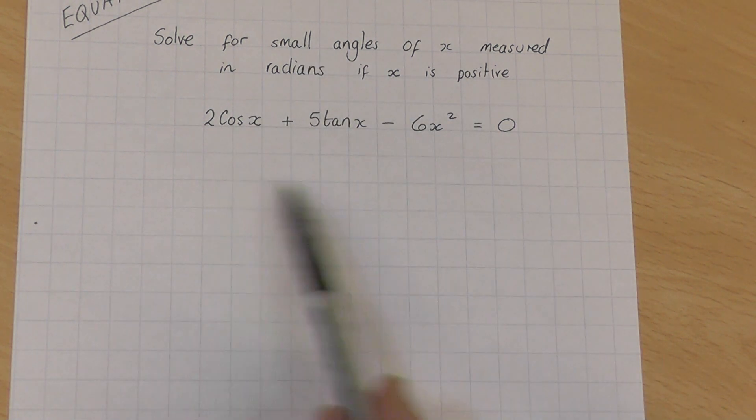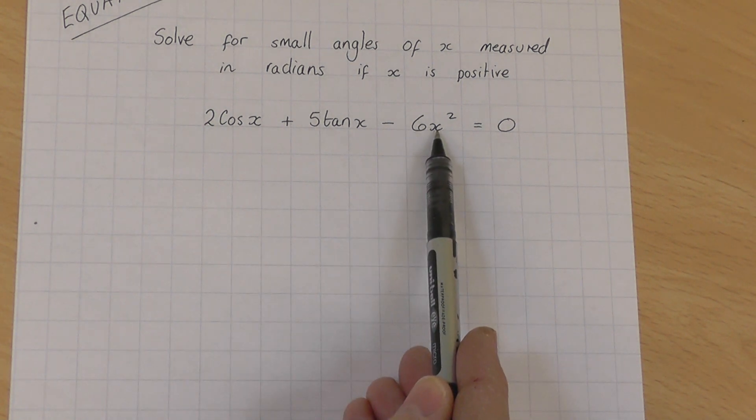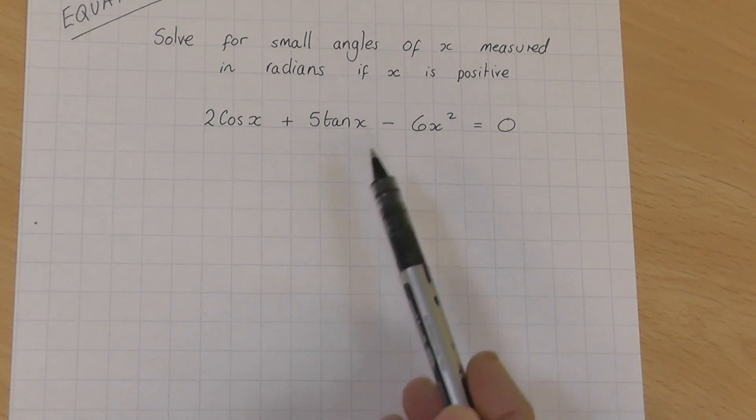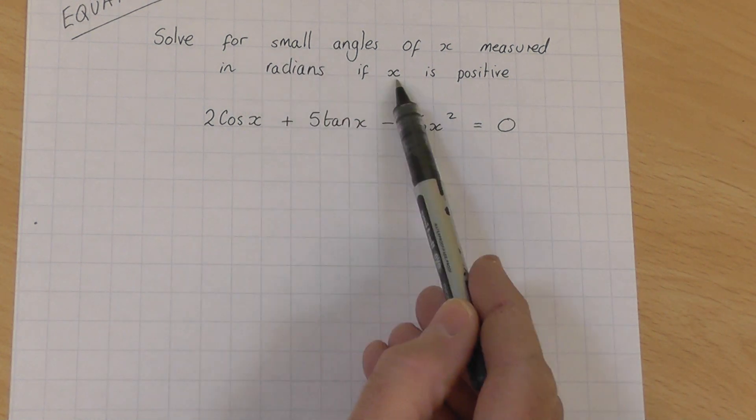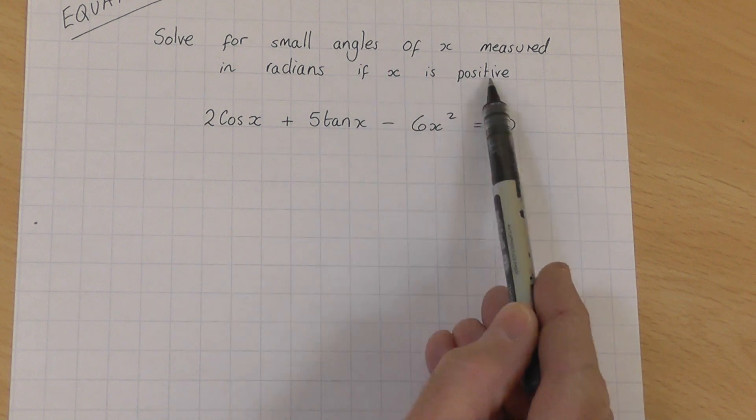Where x is a small angle measured in radians. And what you'll find is we end up with a quadratic equation. You can see we've got x squared involved. So one of the answers when we work through this will be negative, and we're interested in x being positive, so we want the positive root.